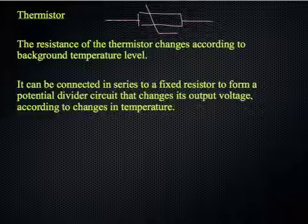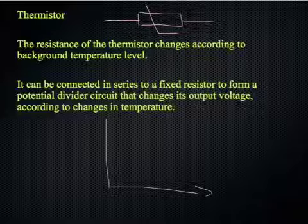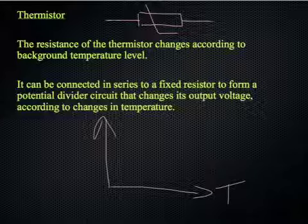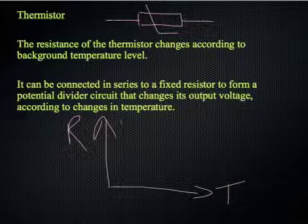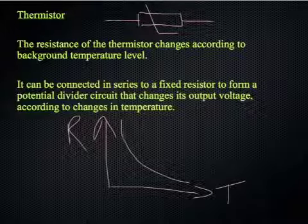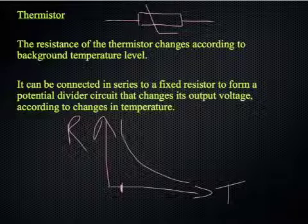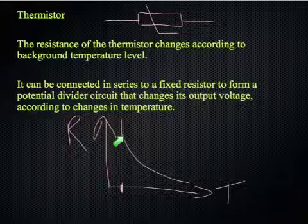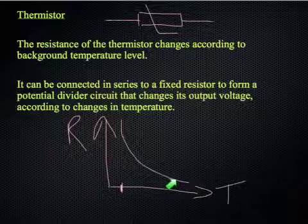So in this case the resistance will change according to background temperature level. If we were to plot a graph of resistance against temperature as follows, the shape of the graph is a curve a bit like this. What it means is for very low temperatures you have quite high resistance values and this drops away at higher temperatures.